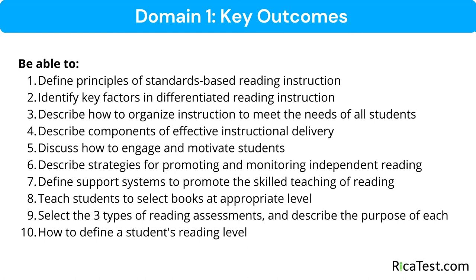Number eight: teach students to select books at the appropriate reading level, which means we teach students to select books using either the Goldilocks rule or the Five Fingers rule — both work. Number nine: select the three types of reading assessments and describe the purpose of each, meaning know the three types — entry level, progress monitoring, and summative assessments — and be able to tell the difference between them and state the purpose of each. Finally, number ten: define a student's reading level, meaning know how to define a student's independent reading level versus their instructional reading level versus their frustration reading level.